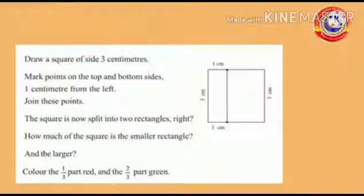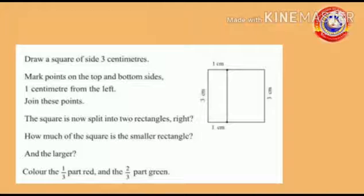See this activity. Draw a square of side 3 cm. Mark points on the top and bottom sides 1 cm from the left. Join these points. At first, we have to draw a square of side 3 cm.